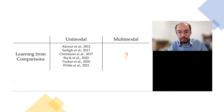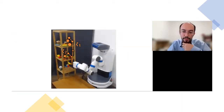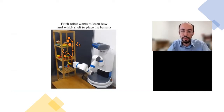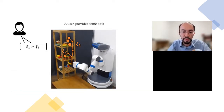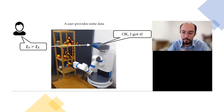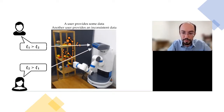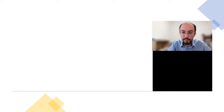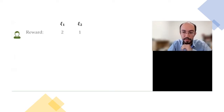Perhaps a user comes in and says they prefer the first trajectory over the second — fetch can handle it because it knows how to learn unimodal rewards. However, if a second user with different preferences shows up, fetch will fail. Let me explain with a numerical example. We have two trajectories, psi_1 and psi_2. The first user's reward for the first trajectory is 2 and 1 for the second. We model the user's comparison response with the softmax model, so the probability that the user chooses a trajectory is proportional to the exponential of its reward.